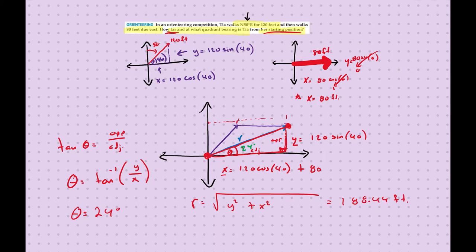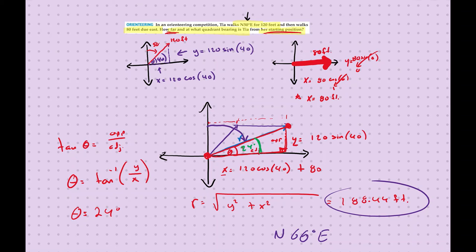Remember, quadrant bearing means measuring from north or south. This angle of 24 degrees is measured from the east axis, so we need the difference from 90 degrees to get the bearing from north. That gives us 90 minus 24 equals 66 degrees. So the final answers are: Tia is approximately 188.44 feet from her starting position at a bearing of N 66° E — 66 degrees northeast.